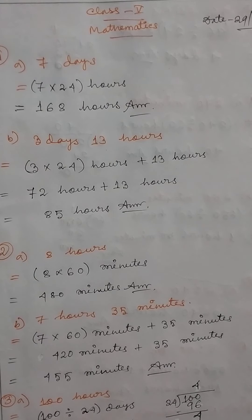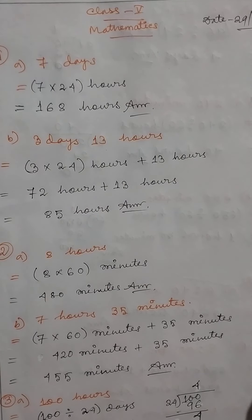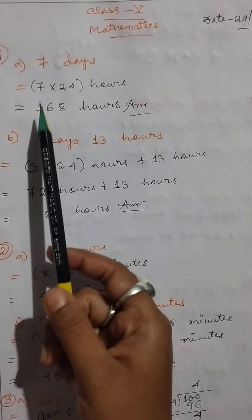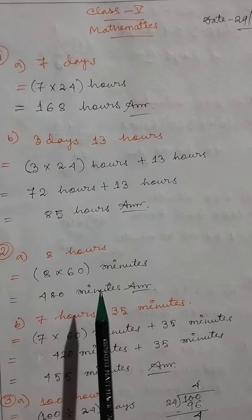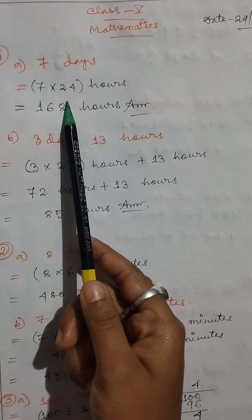Hello students, good morning. Class 5 Mathematics, date 29th of January 2021. Let's start. Number 1a: 7 days. Convert the following into hours. Seven days equals 7 × 24 hours equals 168 hours.